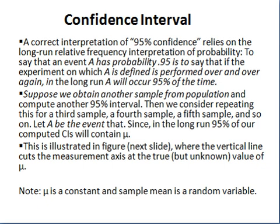It should be noted that the population mean is constant while the sample mean is a random variable, because whenever we collect data the sample values change. A correct interpretation of the 95% confidence interval relies on the long-run relative frequency interpretation of probability — to say an event A has probability 0.95 means that if the experiment is performed over and over again in the long run, event A will occur 95% of the time.